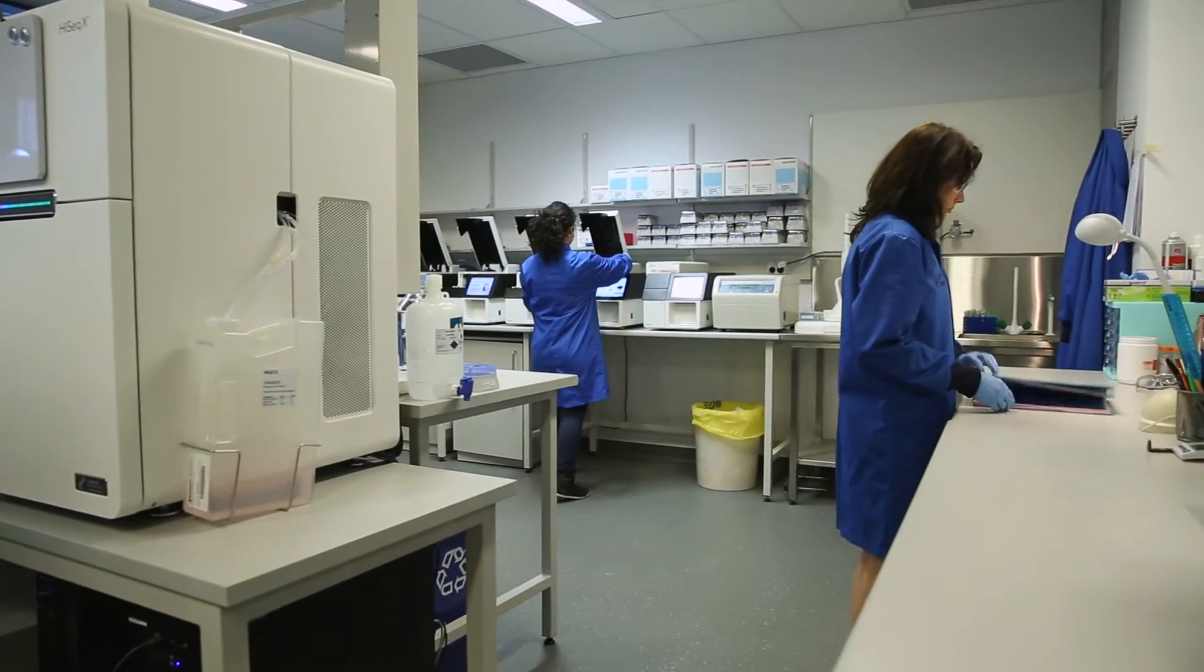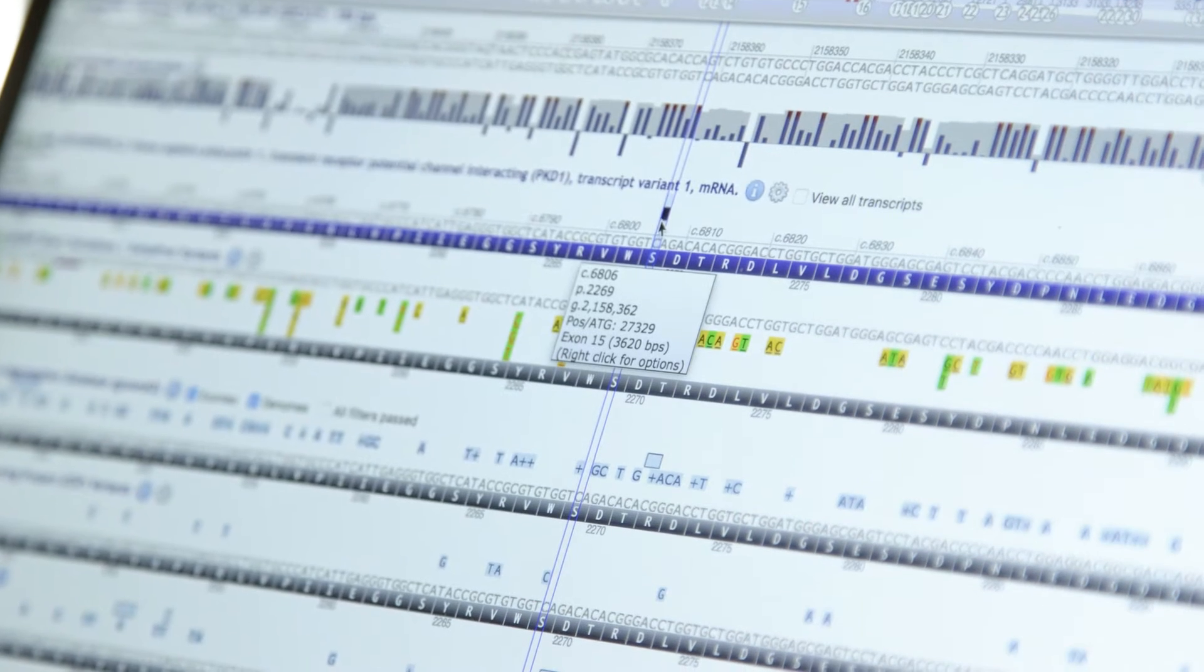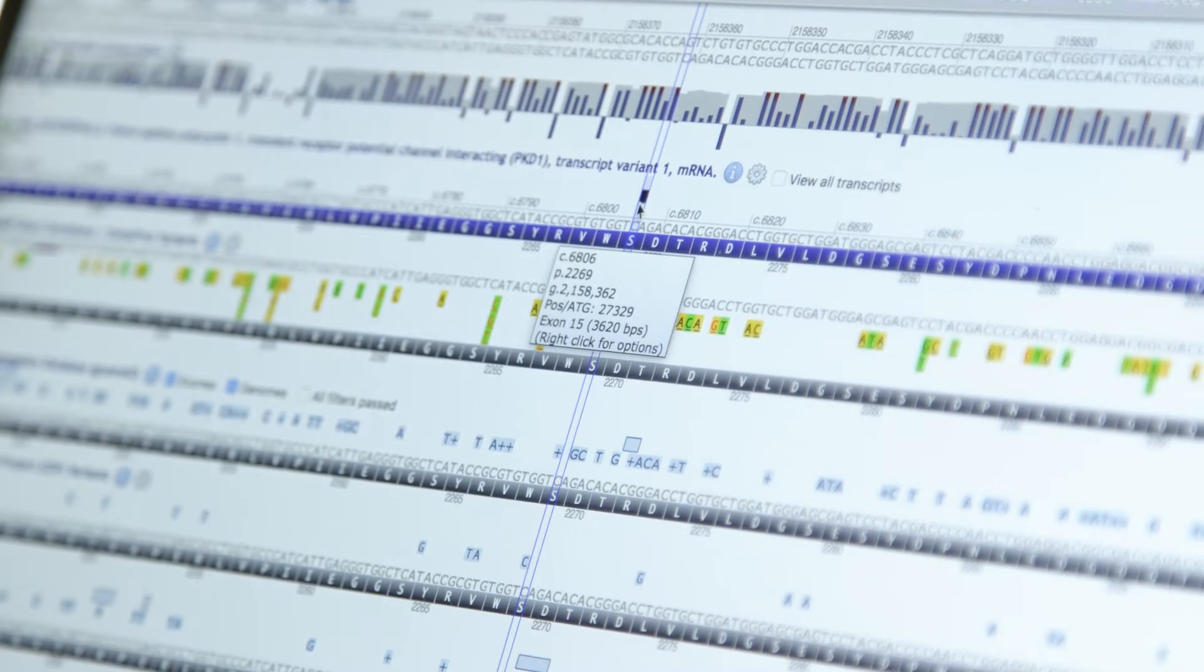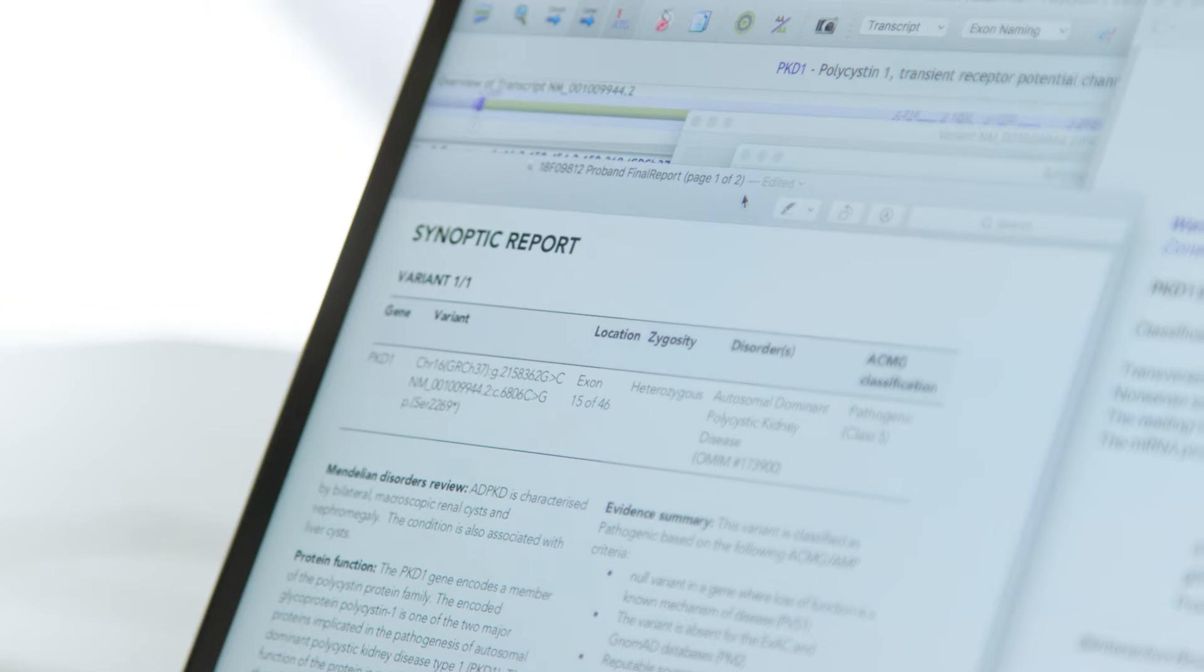My role as a pathologist is to supervise the laboratory to make sure it carries out the testing in an appropriate way and to the appropriate standards. We'll be taking the scientific evidence we have, looking at the genetic variants we find, and expressing that in a synoptic or summary report in terms that the doctor will be able to understand so that they can apply this result to help their patient.